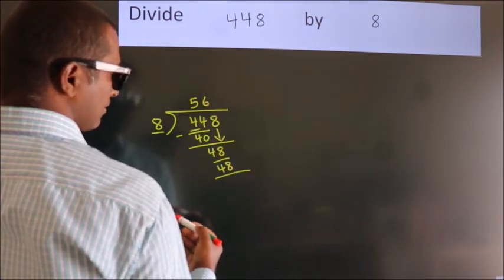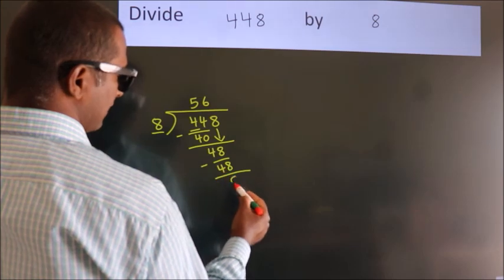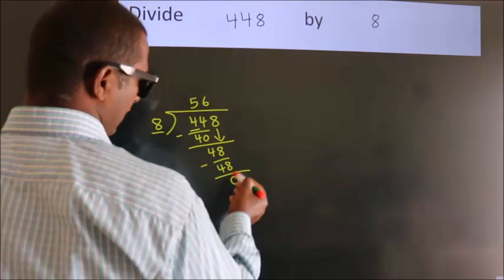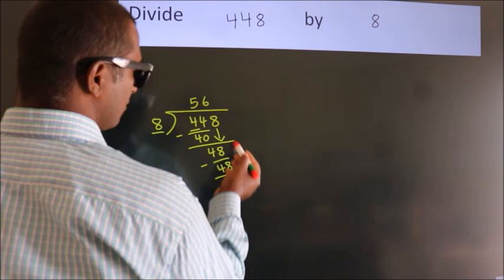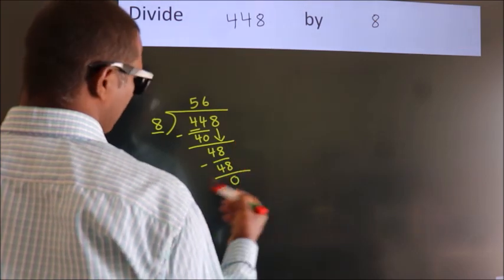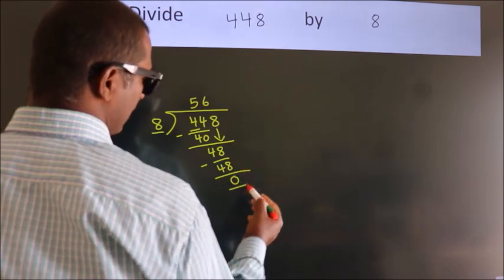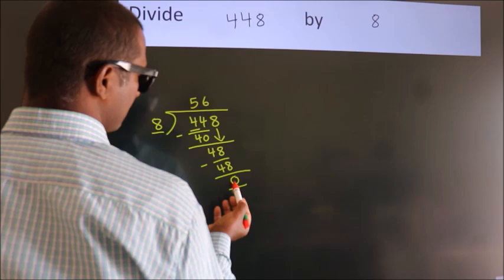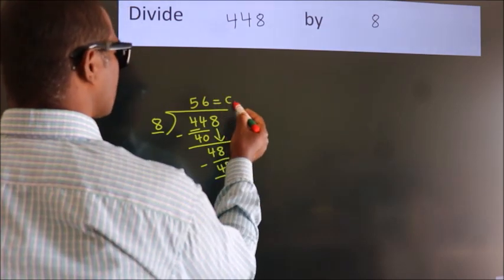Now we subtract, we get 0. After this, no more numbers to bring it down and we got remainder 0. So this is our quotient.